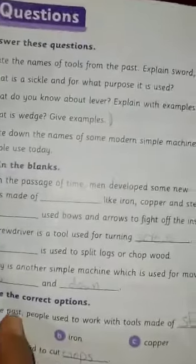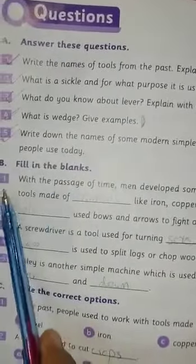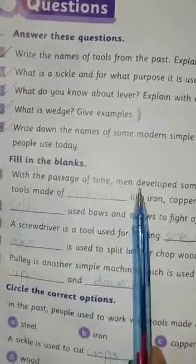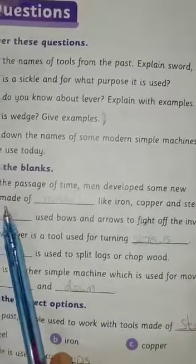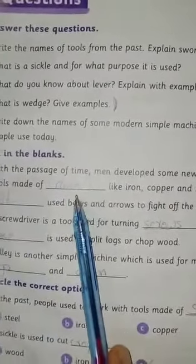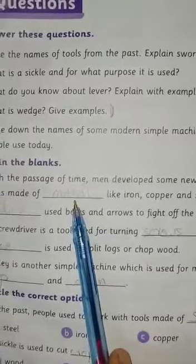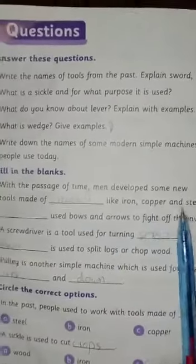Bismillah rahmani rahim. Three class ke liye aaj humara B part hai. Fill in the blanks. Number one: with the passage of time, men developed some new tools made of metal. The answer is metal, like iron, copper and steel.